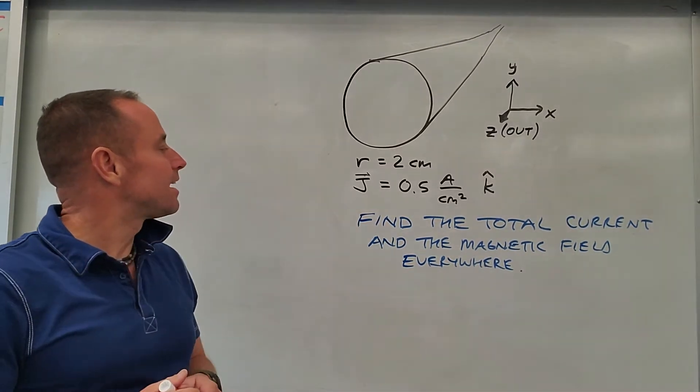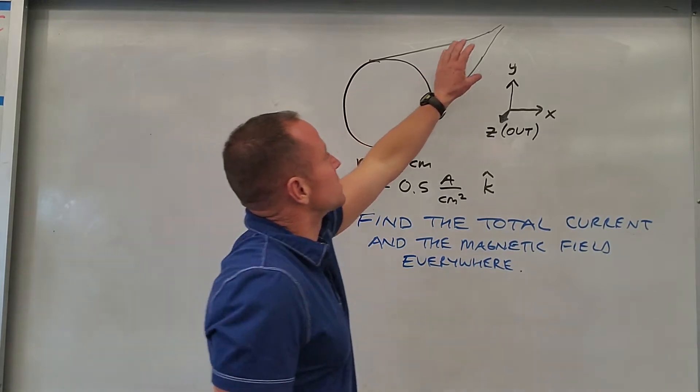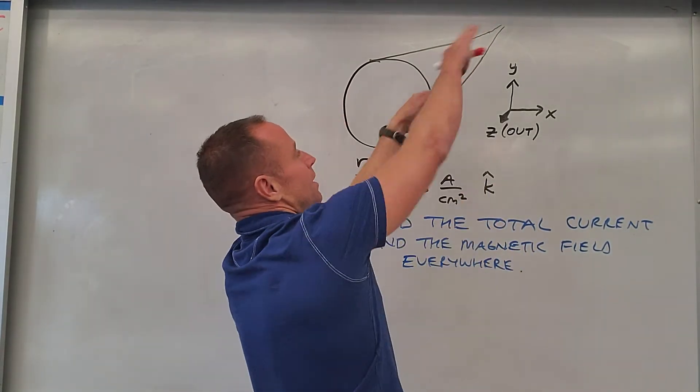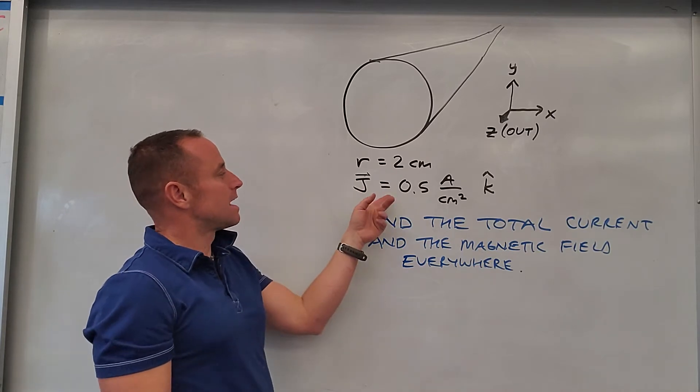This is an introduction to what's called current density and Ampere's law. What's set up here is you've got this long straight wire going out into the distance. It's got a 2 centimeter radius and it's carrying